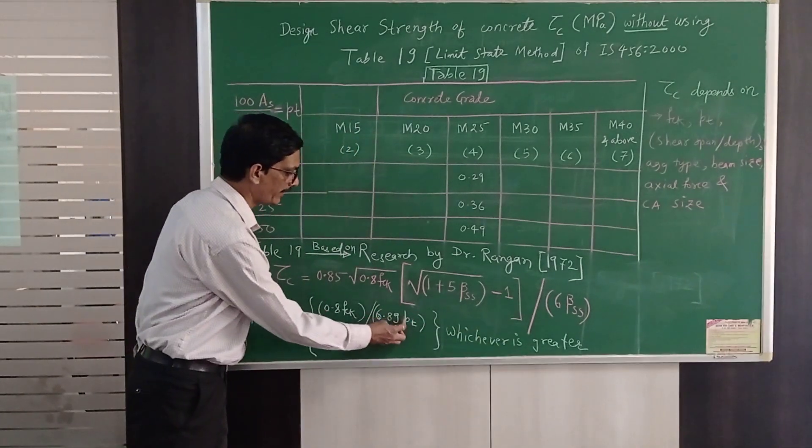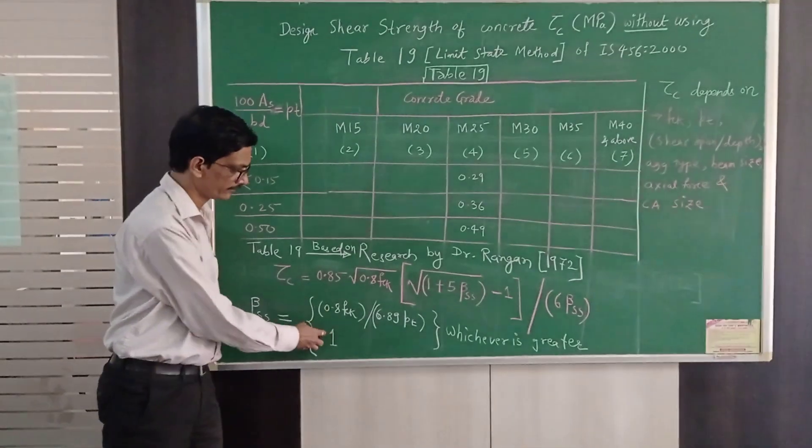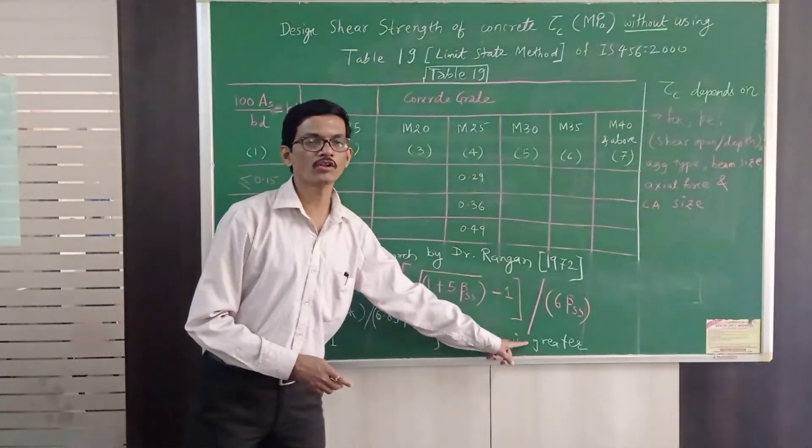But suppose after substituting pt, suppose it is 1.2. Then out of 1.2 and 1 greater is 1.2. So I will take 1.2.